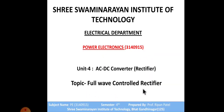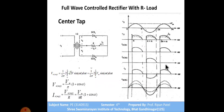In the full wave controlled rectifier we have two types: one is a bridge rectifier and another is a center tap rectifier. Firstly we will see the center tap rectifier. For the full wave controlled rectifier with a purely resistive type of load, the circuit uses a center tap transformer and two SCRs, giving a full wave output.